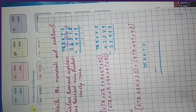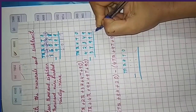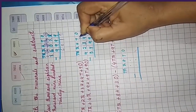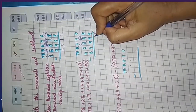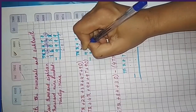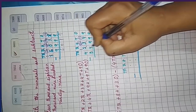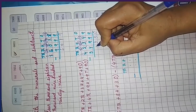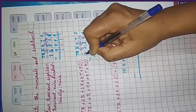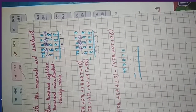9 minus 9 is 0. 0 minus 5 is not possible, so borrow — it becomes 15. 15 minus 9 is 6. Now in the next question: 9 minus 9 is 0, 4 minus 9 is not possible, borrow — it becomes 14. 14 minus 9 is 5. 2 minus 9 is not possible, borrow — it becomes 12. 12 minus 9 is 3. 1 minus 4 is not possible, borrow — it becomes 11. 11 minus 4 is 7. 3 minus 3 is 0. The answer is 7350.